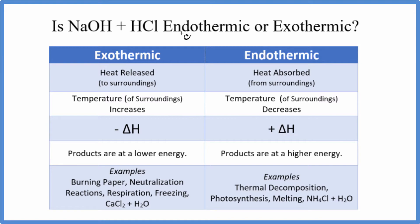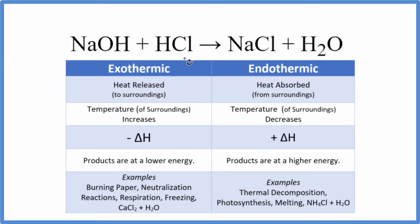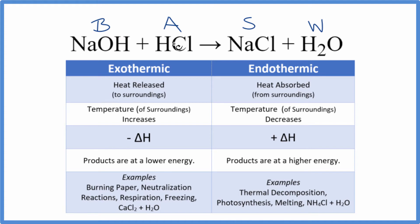So let's take a look at the chemical reaction that takes place. We have solid or aqueous sodium hydroxide and aqueous hydrochloric acid. Sodium hydroxide is a base, and hydrochloric acid is an acid. When we mix them together, we get an ionic compound — called a salt — and then we get water. So when we have a base and an acid mix together and get a salt and water, that is a neutralization reaction.